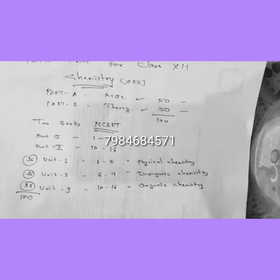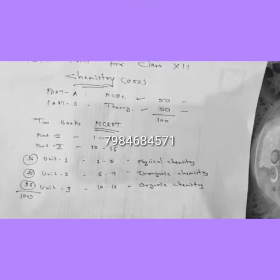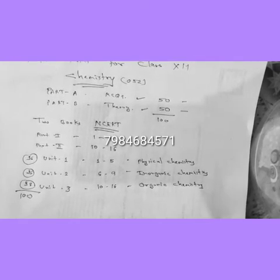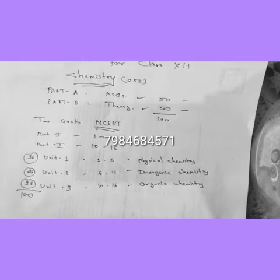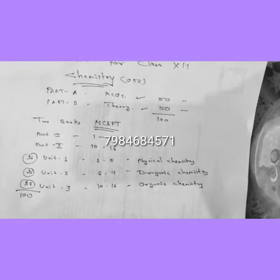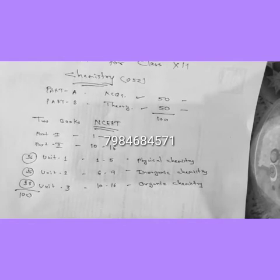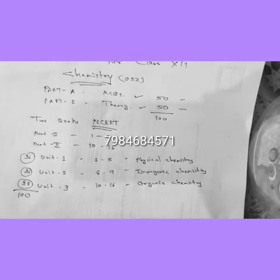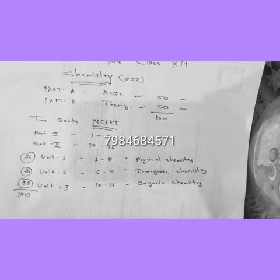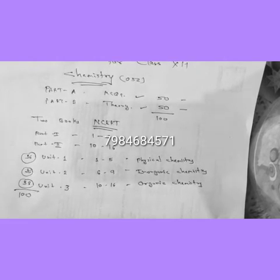Unit 1 covers chapters 1 to 5, which we consider as Physical Chemistry, and the total marks allotted to this unit is 36. Unit 2 covers chapter 6 to chapter 9, considered as Inorganic Chemistry, with 26 marks. Unit 3 covers chapters 10 to 16, considered as Organic Chemistry, with 38 marks.